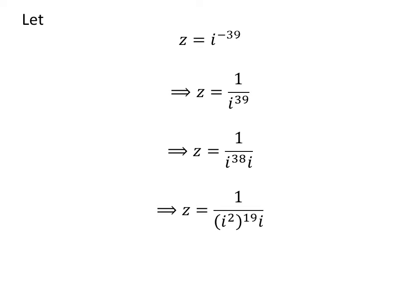As 38 is 2 times 19, we can express the above statement as z is equal to 1 upon square of i raised to the power of 19 times i.